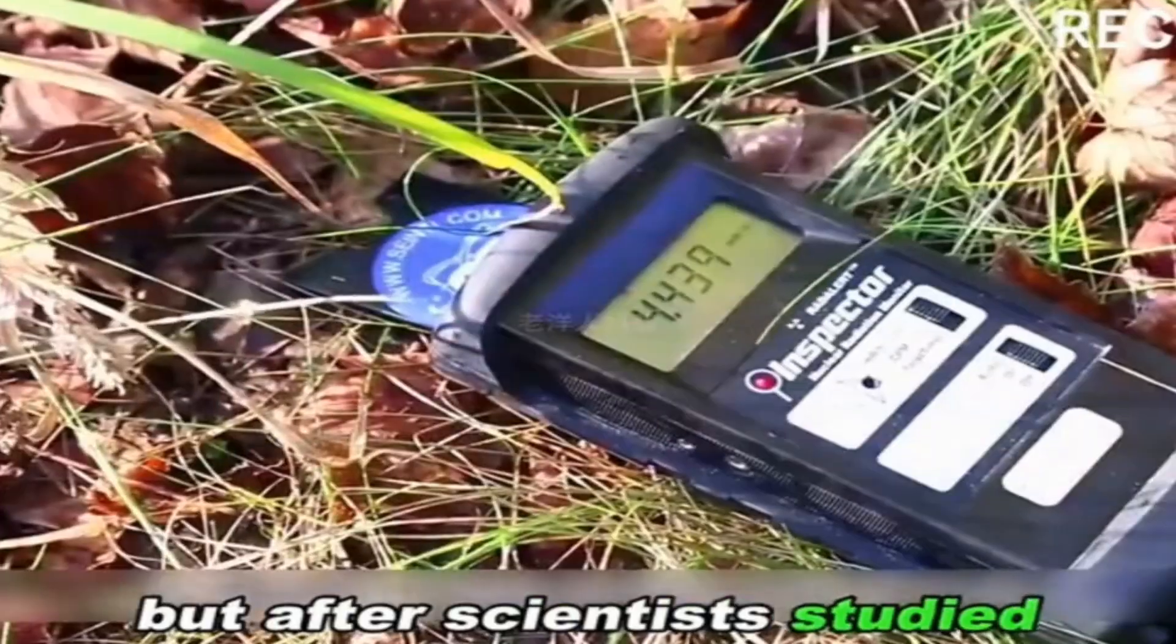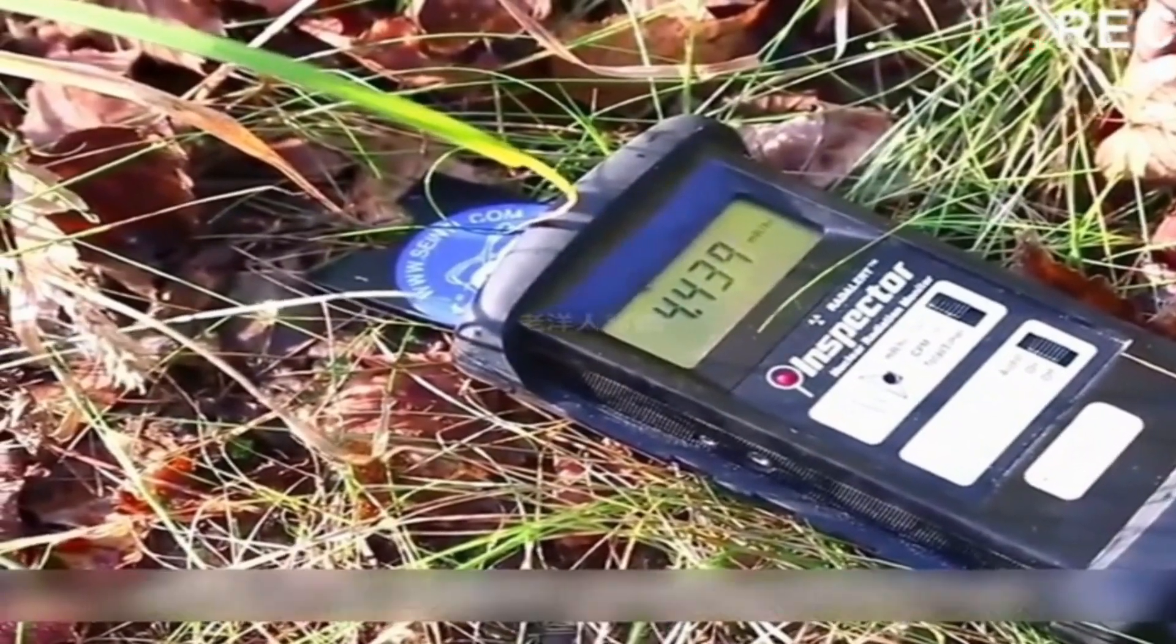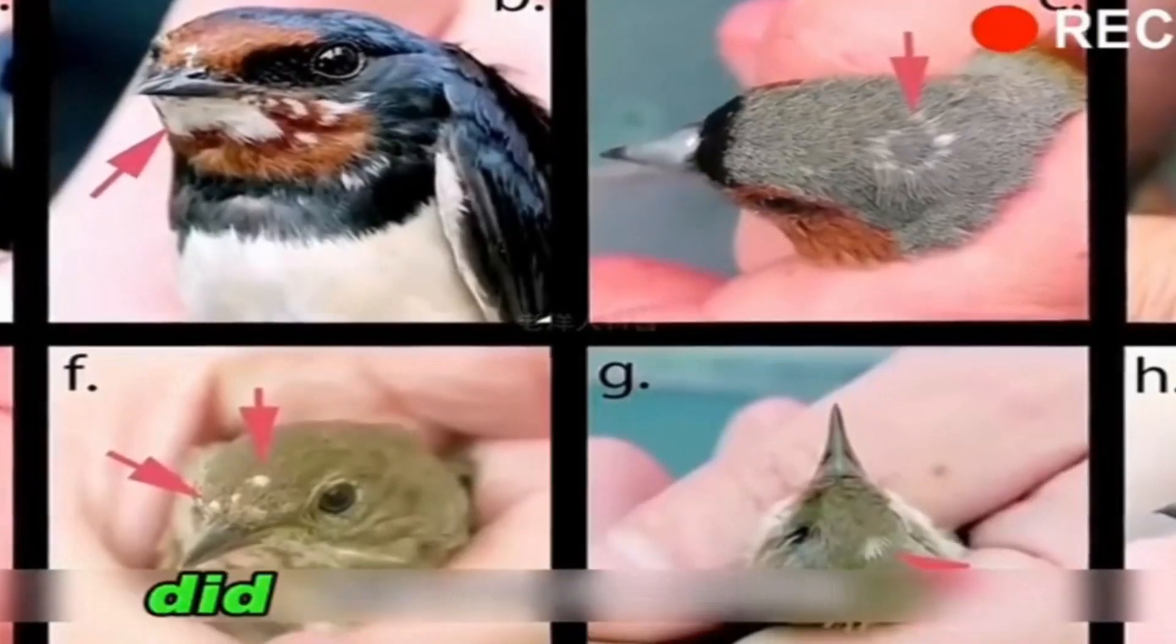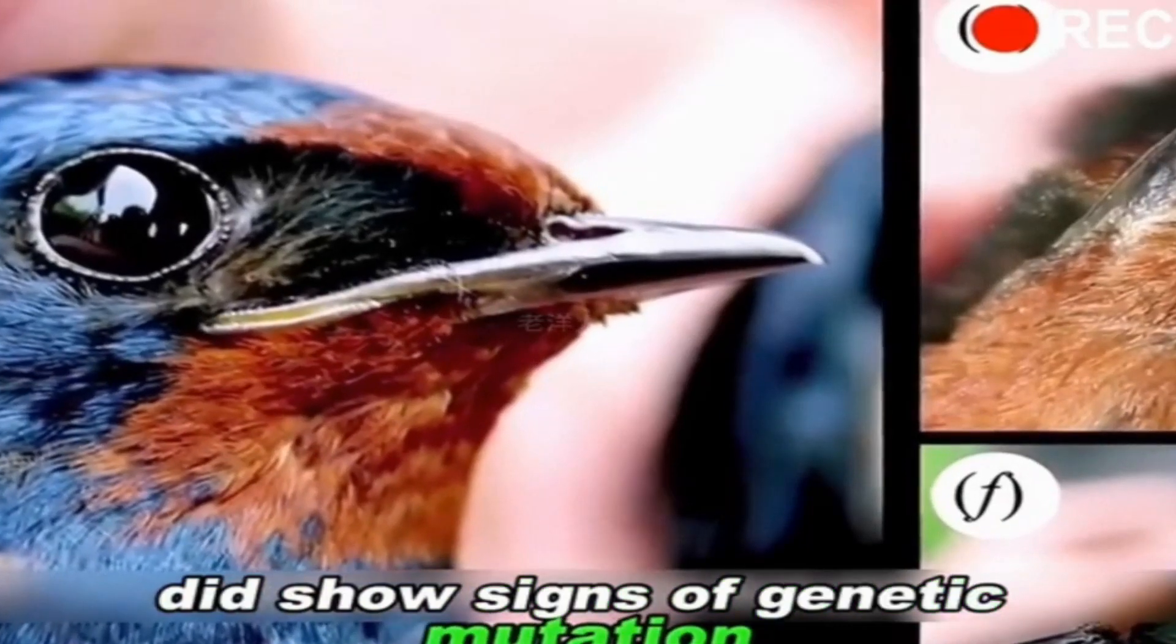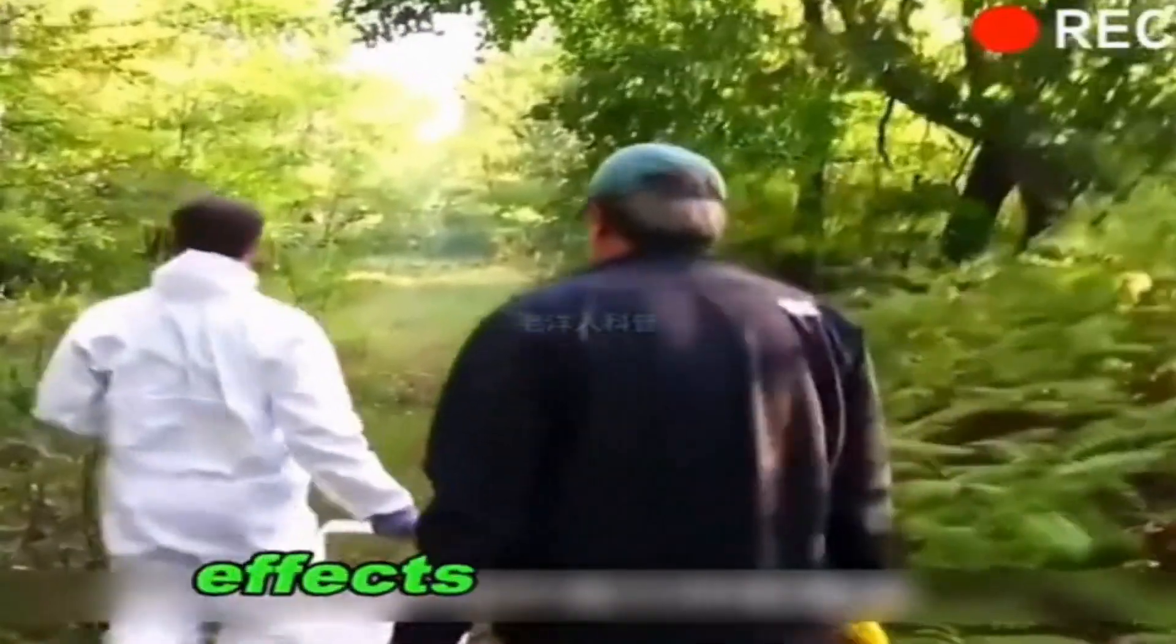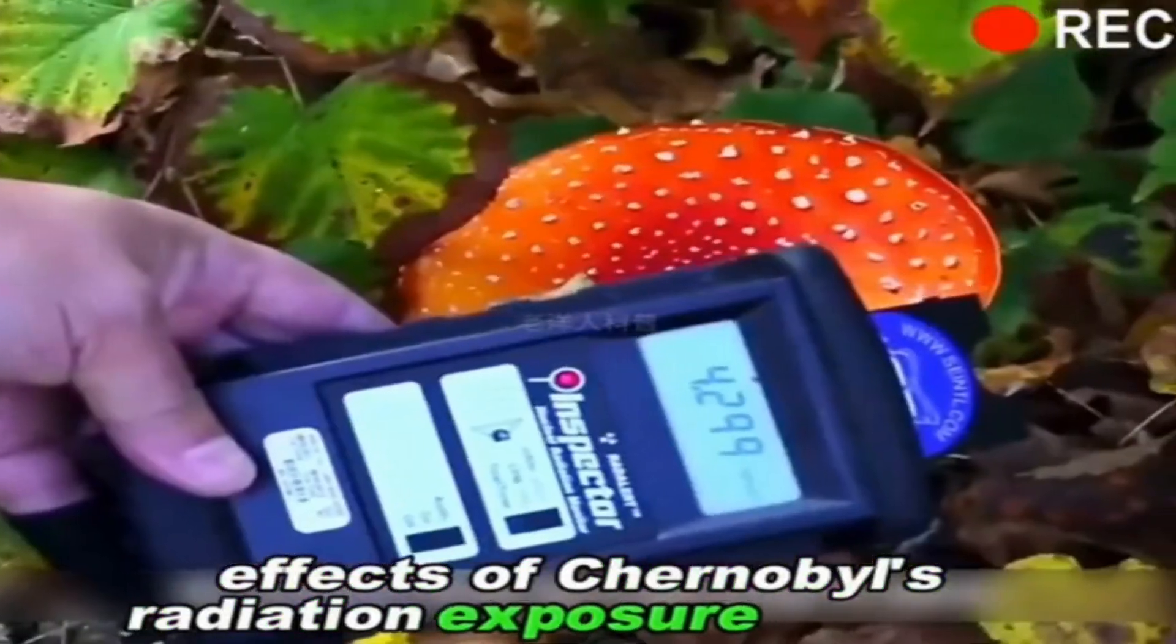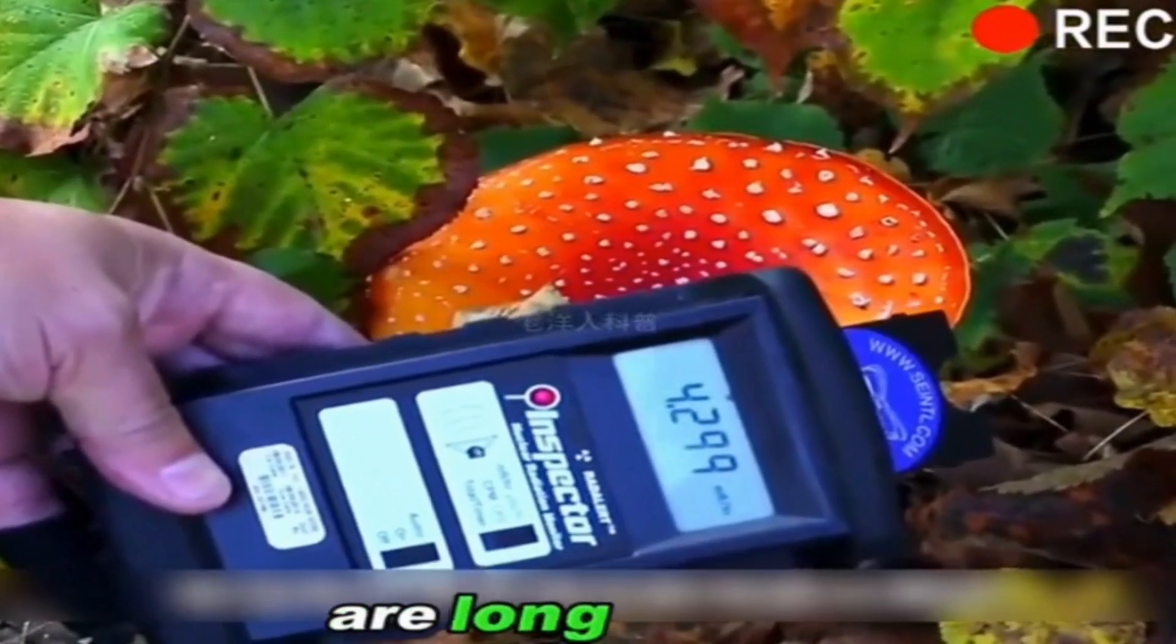But after scientists studied the animals in the radiation area, they found that some species did show signs of genetic mutation, which suggests that the effects of Chernobyl's radiation exposure on local life are long-lasting.